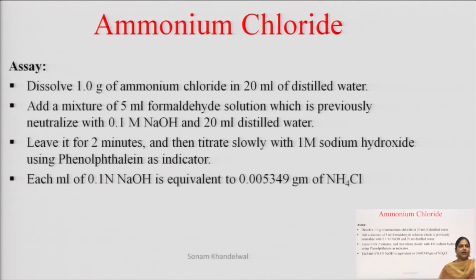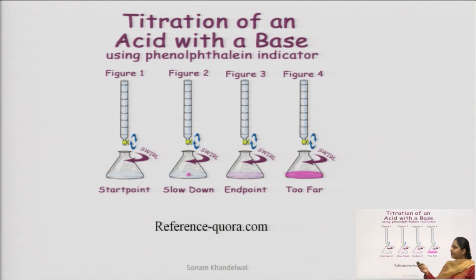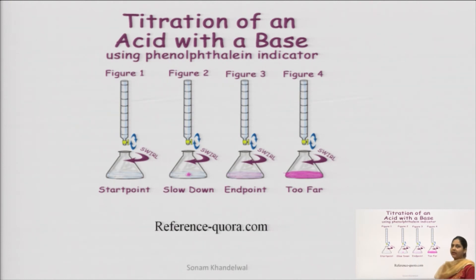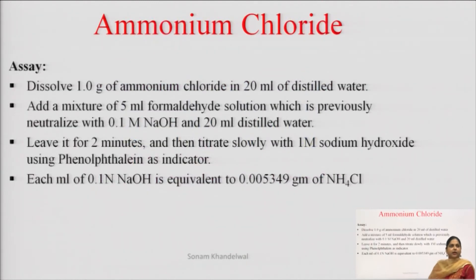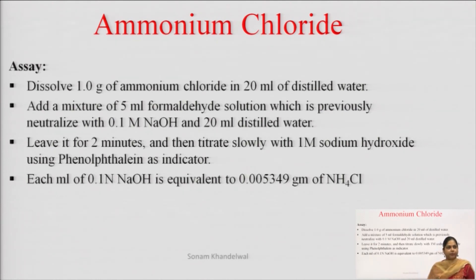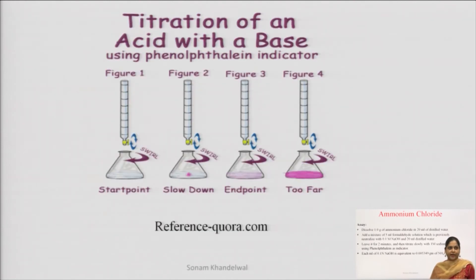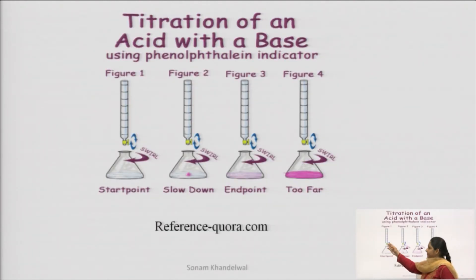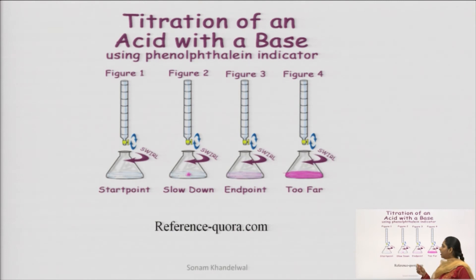The equivalent factor is basically how we check purity. You can see the figure here — 4 burettes and 4 conical flasks. Initially when we start titration, we start with this conical flask. We do the titration with ammonium chloride, formaldehyde solution, as well as phenolphthalein indicator. When we start titration, we have to rotate our conical flask in a swirling movement.